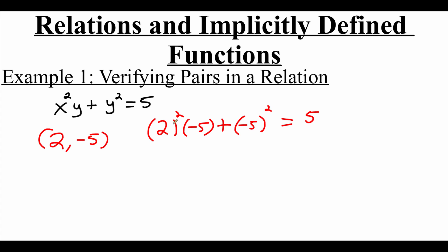So 2 squared is 4, and 4 times negative 5 is negative 20. Then if we take negative 5 and square it, when you square something negative it becomes positive, and 5 squared is 25. So we've got negative 20 plus 25, and if we take negative 20 plus 25 we do get 5. We get 5 equals 5, and because we got a true statement, that confirms that this ordered pair is part of the relation.